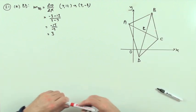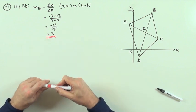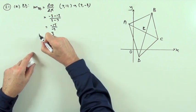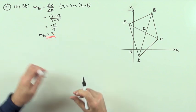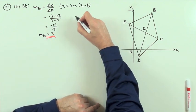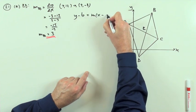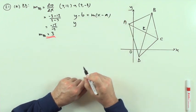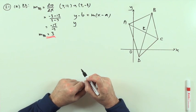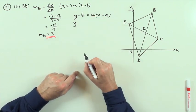So the gradient of BD is 3 and the next part is, maybe I should have put that there, get the equation of the line. We'll just put it over here, it's maybe a bit messy. So y minus b is mx minus a. Choosing either of those points, maybe I'll just choose the smaller of them, so this one here.